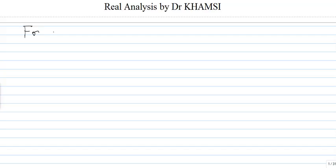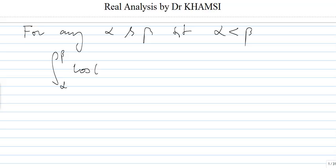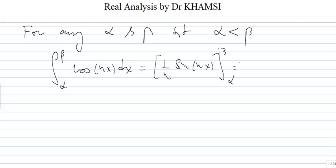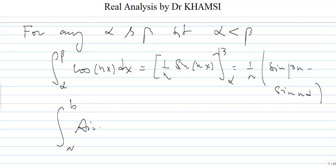First of all, note the following. For any alpha and beta real numbers such that alpha is less than beta, the integral from alpha to beta of cosine(nx) dx equals (1/n) sine(nx) evaluated between alpha and beta, which gives (1/n)(sine(n·beta) minus sine(n·alpha)). And the integral from alpha to beta of sine(nx) dx gives (1/n)(cosine(n·beta) minus cosine(n·alpha)).